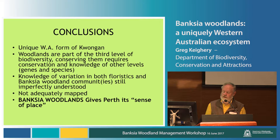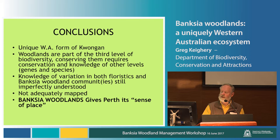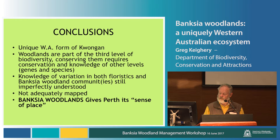My conclusions are that Banksia woodlands are something we should be very proud of because they are a unique West Australian form of Kwongan — found nowhere else. They are part of the third level of biodiversity, and conserving them requires knowledge of all the other levels. If we just concentrate on species or genes, we'll lose the communities. Knowledge of the variation in both the floristics and the Banksia woodland communities of our state is still imperfectly understood and certainly not adequately mapped. Losing the Banksia woodlands — as George Seddon's book on Perth's sense of place makes clear — would be very sad. In the 40 years since the first symposium, we have lost an awful lot of them. It's nice to see a symposium looking at how we can replenish and restore some of our woodlands into the future. Thank you.